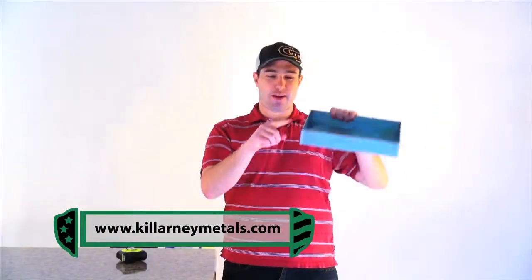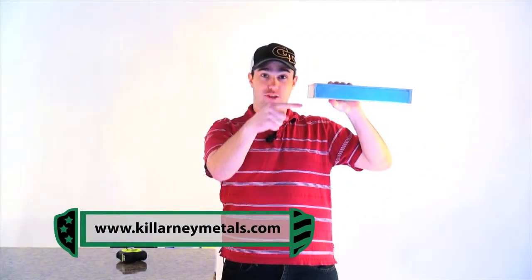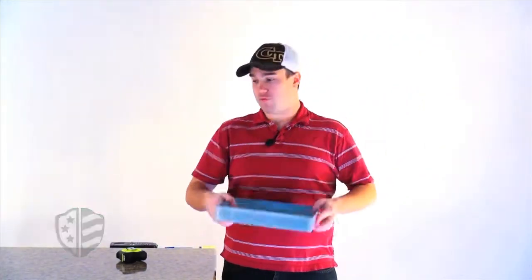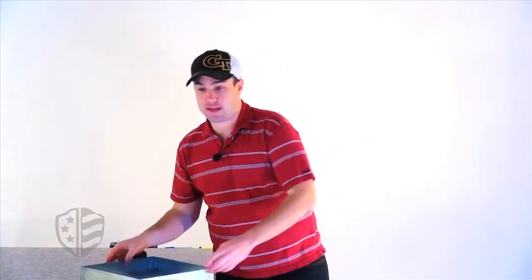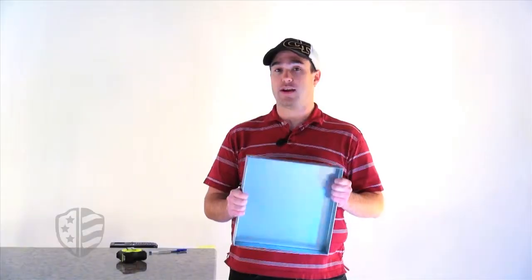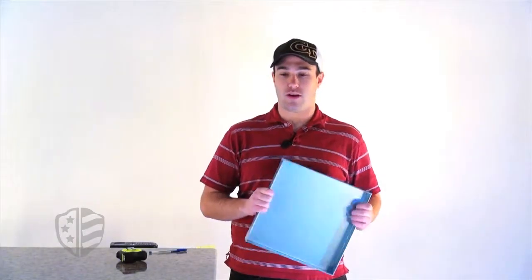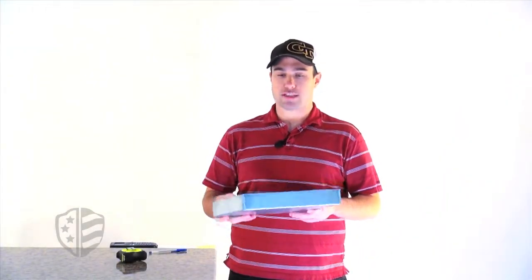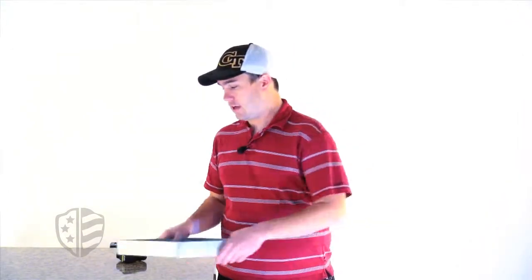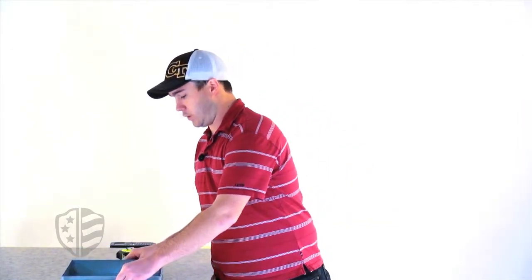I take my ruler and I measure the depth — this is going to be two inches. So 144 times two is going to be 288 cubic inches, and we divide it by 231. This pan actually holds approximately one and a quarter gallons of liquid.